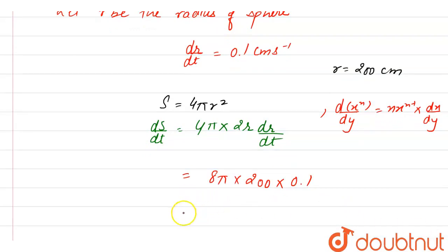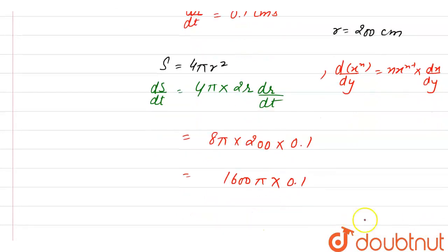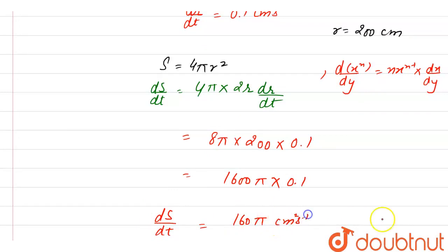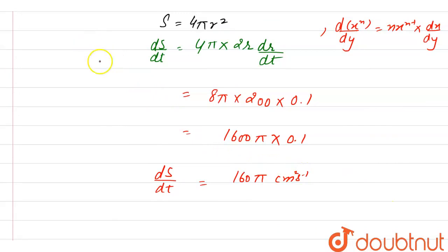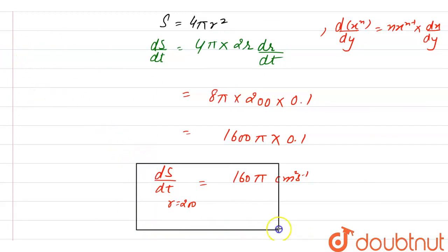Let's solve this and get our answer. 8 times 200 is 1600π, times 0.1, and multiplying this we get ds/dt equals 160π cm² per second, when the radius is 200 cm. Hence, this is our final answer. Thank you.